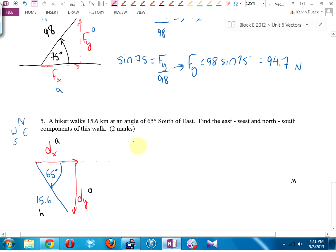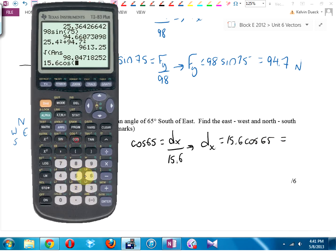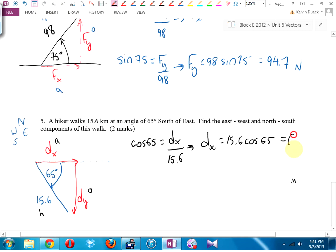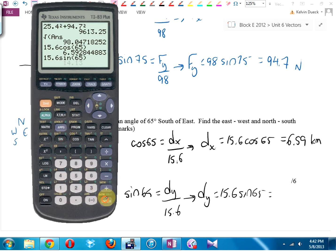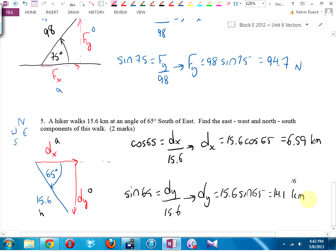Opposite hypotenuse adjacent. You know what? Again, this time, cos 65 gives me adjacent over hypotenuse dx, or you could call it d east if you really wanted to. That's going to be 15.6 cos 65. 6.59, 6.6, and it's kilometers, yes, yep. Sine 65 equals opposite over hypotenuse. Sine, 14.1 kilometers. One mark, one mark.